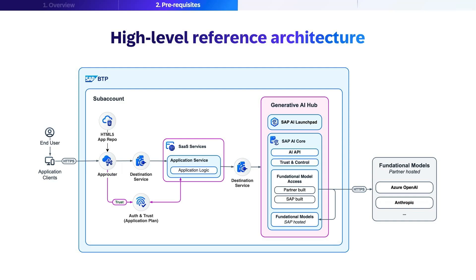Authentication and trust are handled through the auth and trust component. From there, another destination service forwards the request to the API hub, which is the central component of this architecture. The generative AI hub contains the SAP AI Launchpad for management and monitoring, SAP AI Core with the AI API for programmatic access, and trust and control mechanisms for model access. The foundational model access components can connect to both partner-built and SAP-built models. SAP AI Core can then access both SAP-hosted foundational models and partner-hosted models like Azure AI through secure HTTPS connections. This architecture ensures secure, controlled, and efficient access to AI capabilities while maintaining integration with the broader SAP ecosystem.